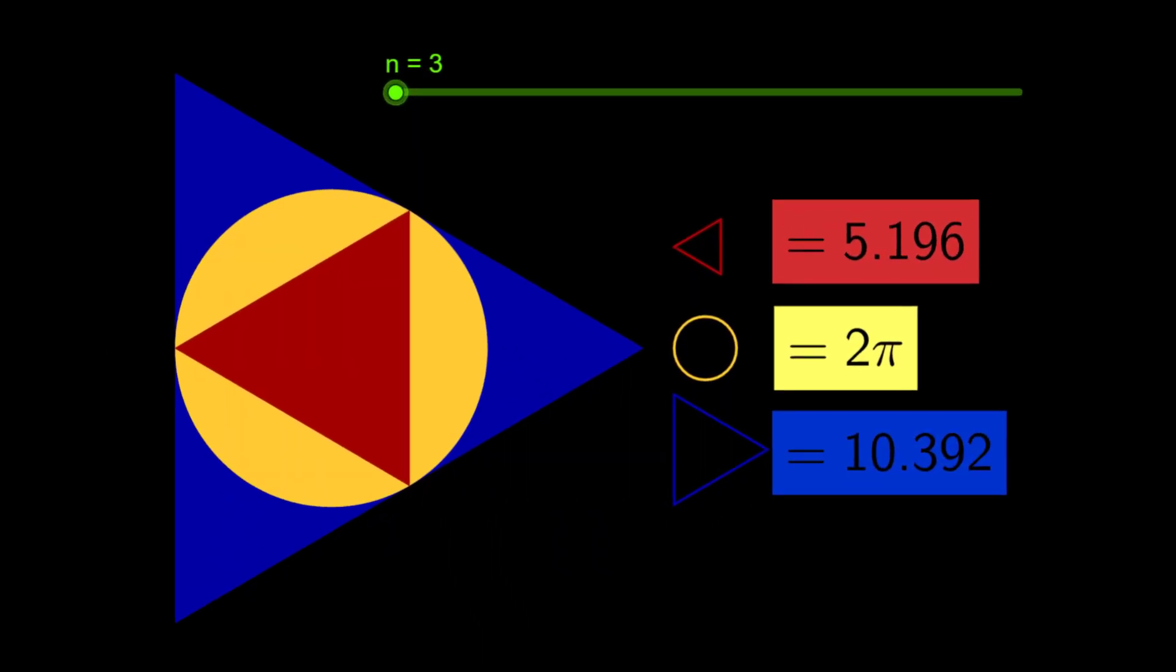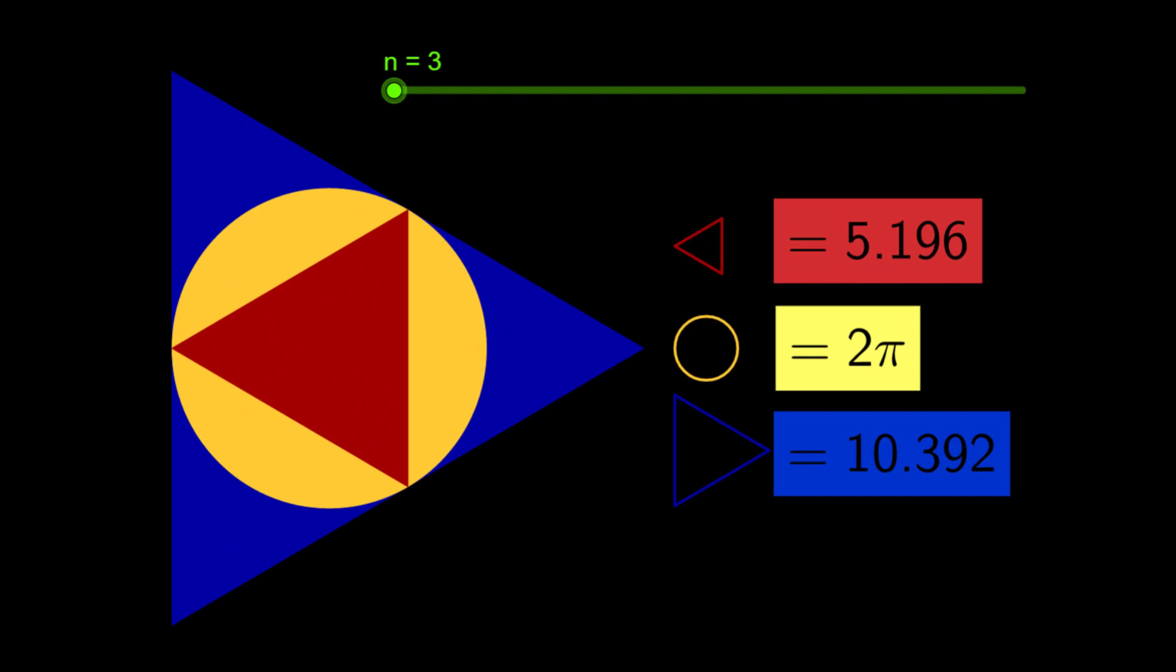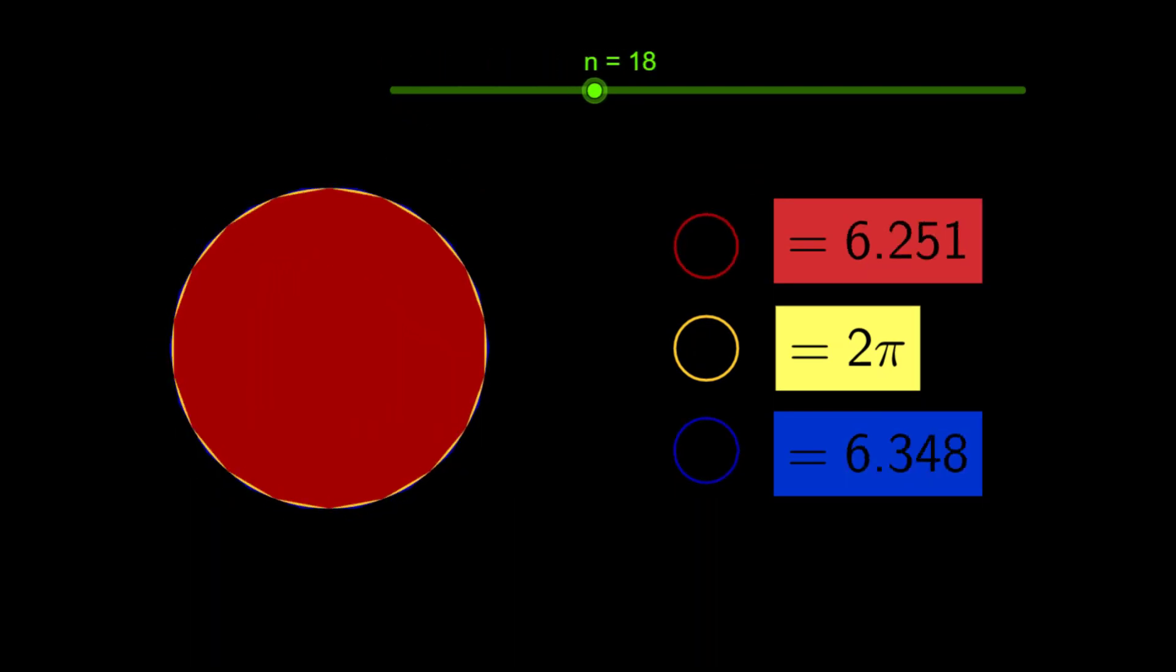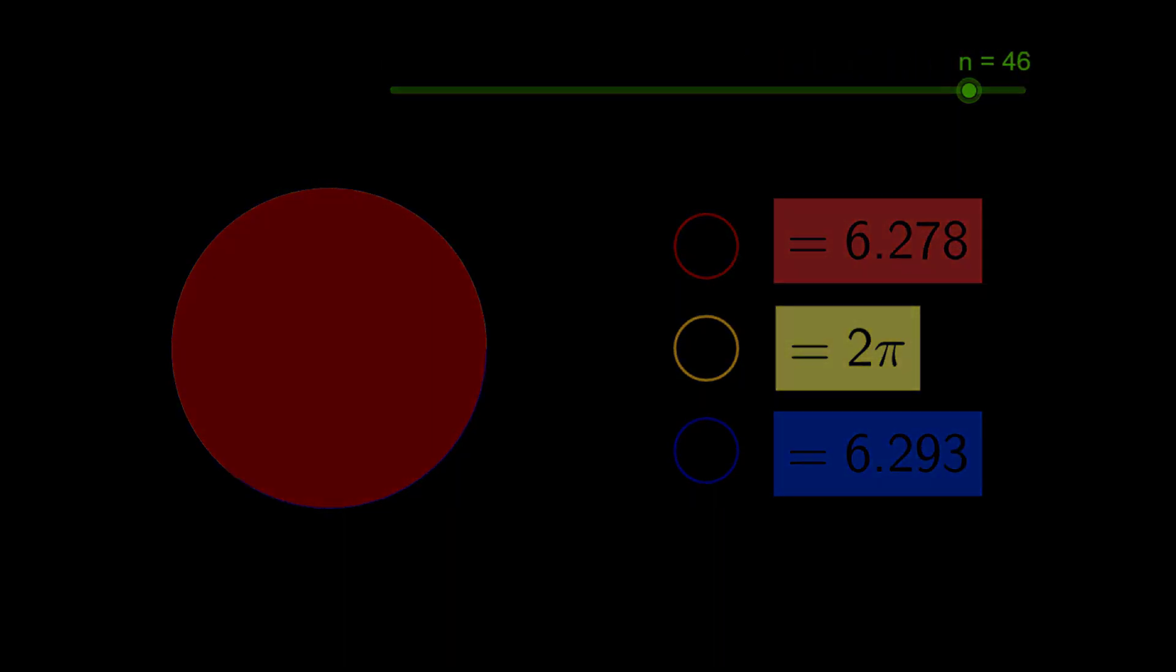The method he employed was a rather good one, that of approximating the contour of the circle by polygons. Since Archimedes knew how to compute the lengths of the sides of the regular polygons with great accuracy, he was able to obtain information about circles. He used polygons with 96 sides.